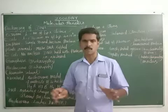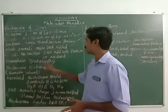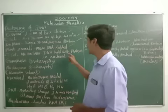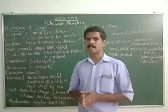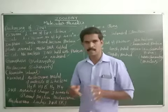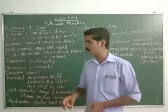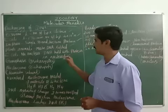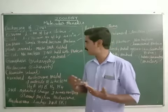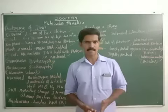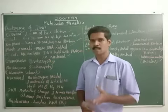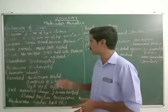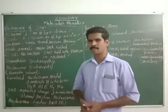In prokaryotic bacteria there is no nucleus. So the DNA molecule in prokaryotic bacteria is held with a protein molecule in a specific region. The name of that region is called the nucleoid region. Inside the nucleoid region, the DNA is held with a protein molecule, because in prokaryotic bacteria there is no nucleus.